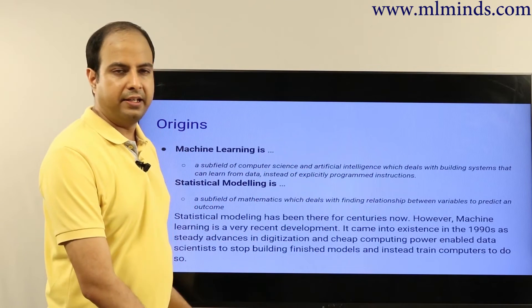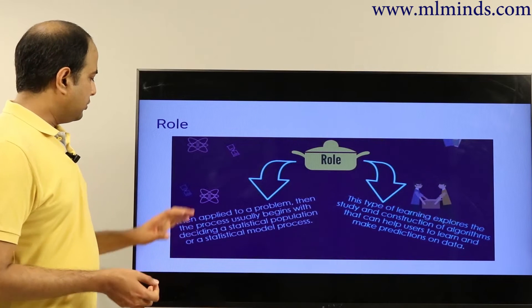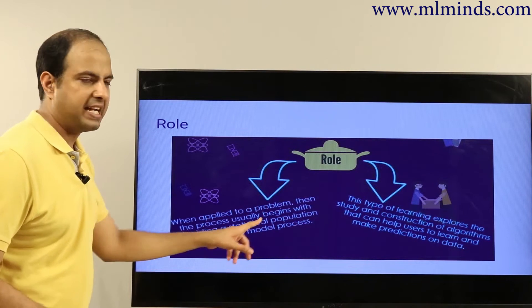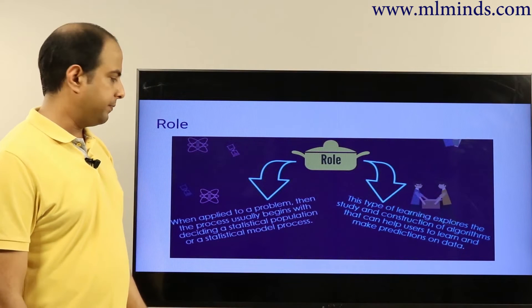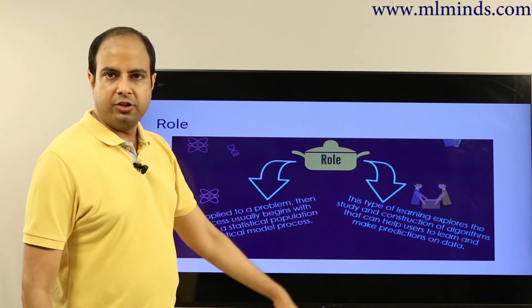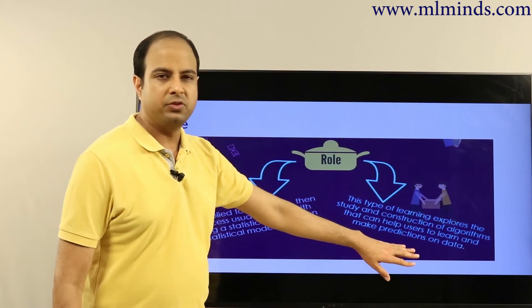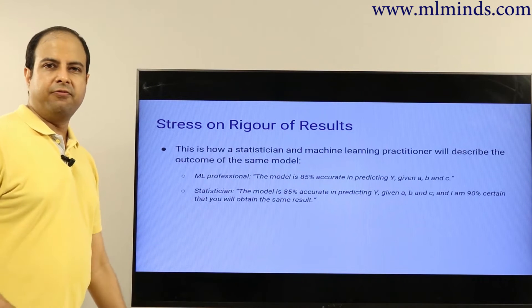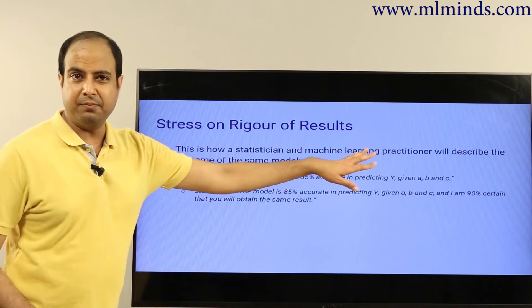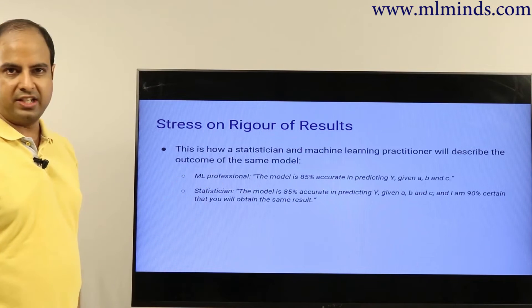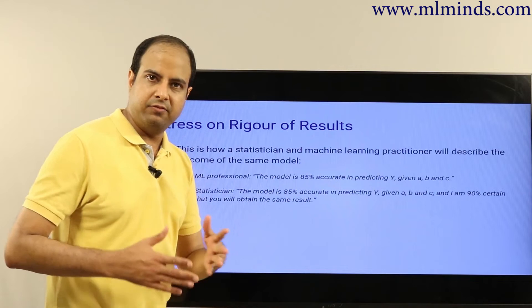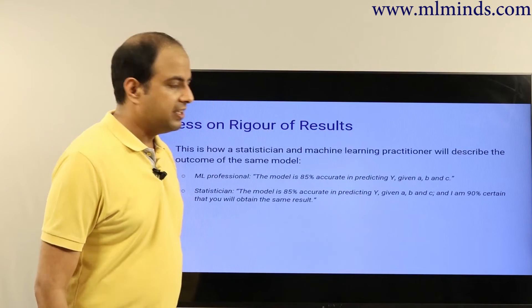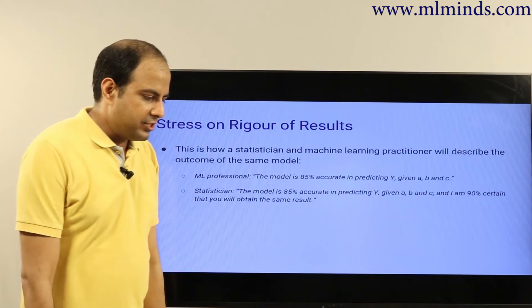When applying these to a problem, the process for statistics usually begins with deciding on a statistical population or a statistical model. For machine learning, it involves the study and construction of algorithms that can help users learn and make predictions based on data. From the perspective of rigor of results, a machine learning professional would say 'my model is 85% accurate in predicting Y given parameters A, B, and C,' while a statistician would say 'the model is 85% accurate in predicting Y given A, B, and C, and I am 90% certain you will obtain the same result.'